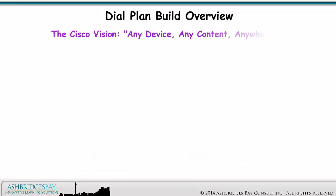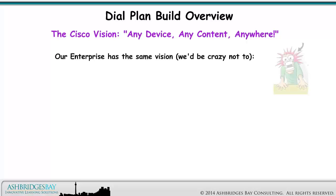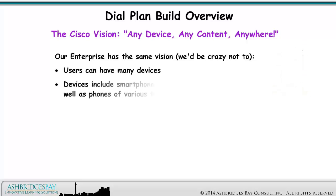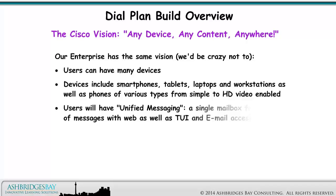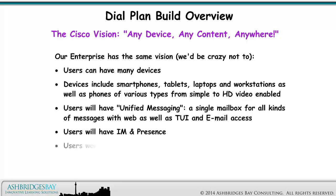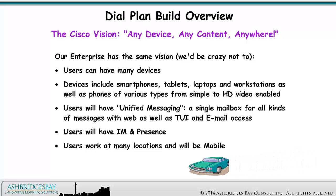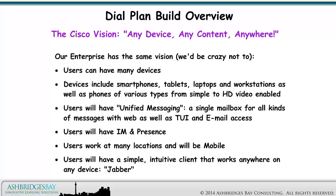The Cisco vision: any device, any content, anywhere. Our enterprise has the same vision — we'd be crazy not to! Users can have many devices, including smartphones, tablets, laptops and workstations, as well as phones of various types from simple to HD video enabled. Users will have unified messaging — a single mailbox for all kinds of messages with web, TUI, and email access. Users will have IM and presence, work at many locations, be mobile, and have a simple, intuitive client that works anywhere on any device.